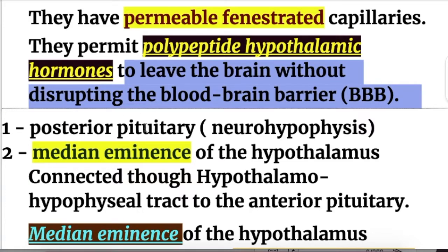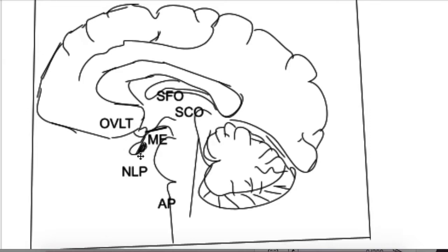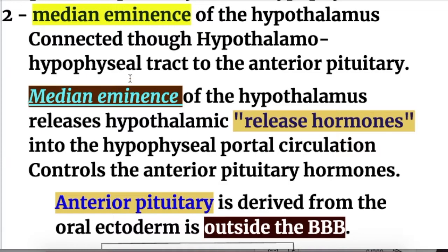Number one: the posterior pituitary, or neurohypophysis. It's a storage site of the hypothalamic hormones oxytocin and vasopressin, and is connected to the hypothalamus through the hypothalamo-hypophysial nervous tract.